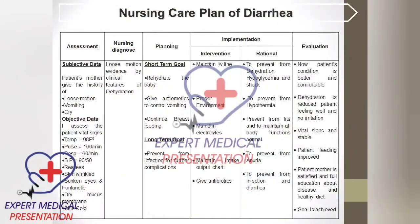Nursing care plan for diarrhea. Assessment — subjective data: patient's mother gives history of loose motion and vomiting, baby is crying. Objective data: vital signs assessed — temperature equals 98°F, pulse equals 160 per minute, respiratory rate equals 60 per minute.